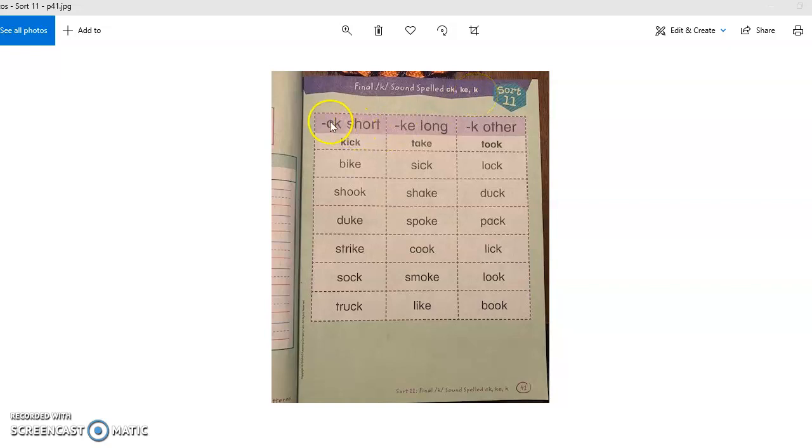So the sort is going to be a three-part sort. You're going to be sorting words into words that have the ending K sound, the ending K with a CK, the ending K with a KE, and the ending K with just a K.